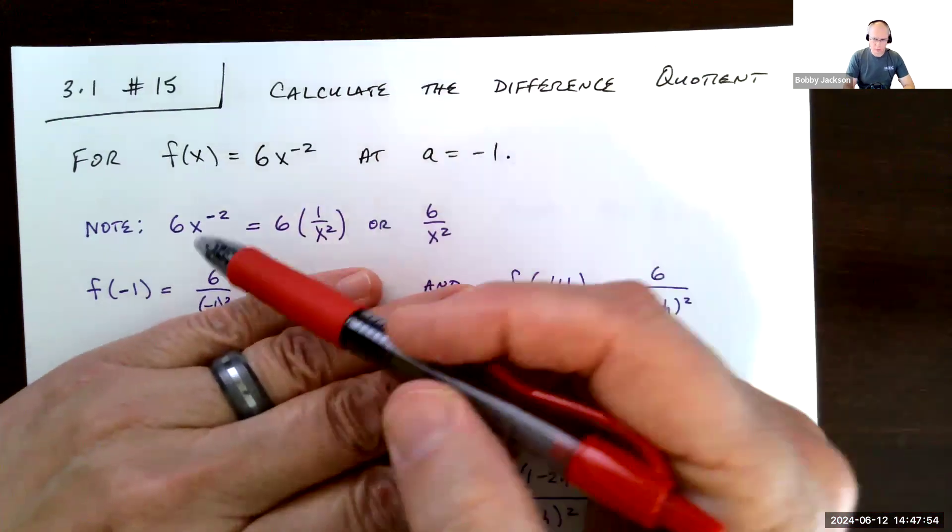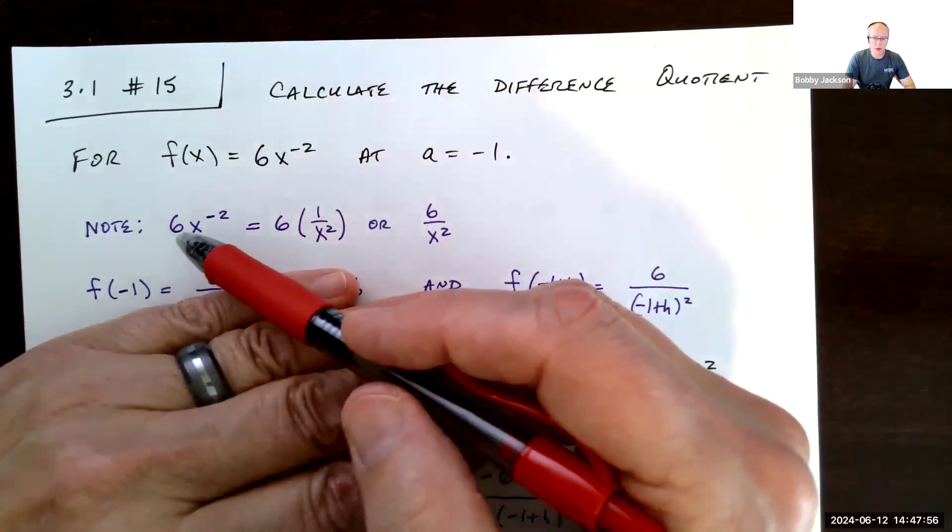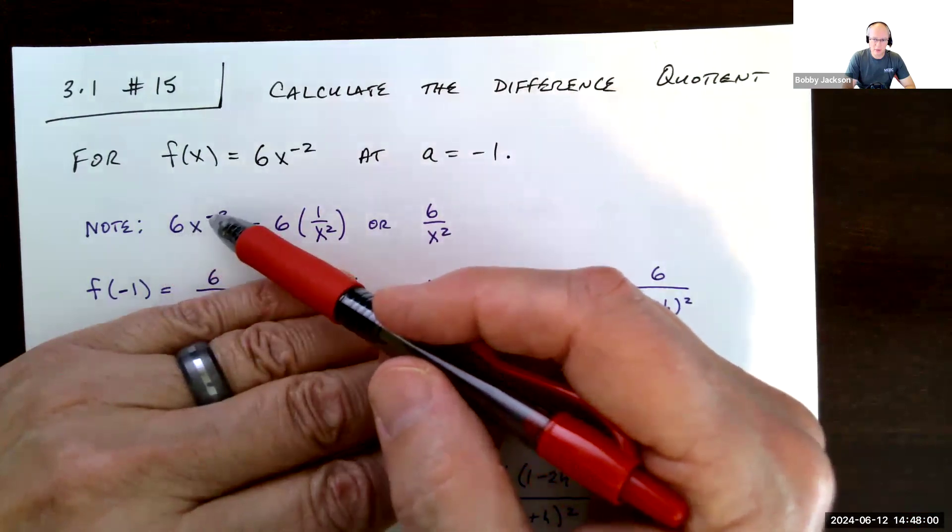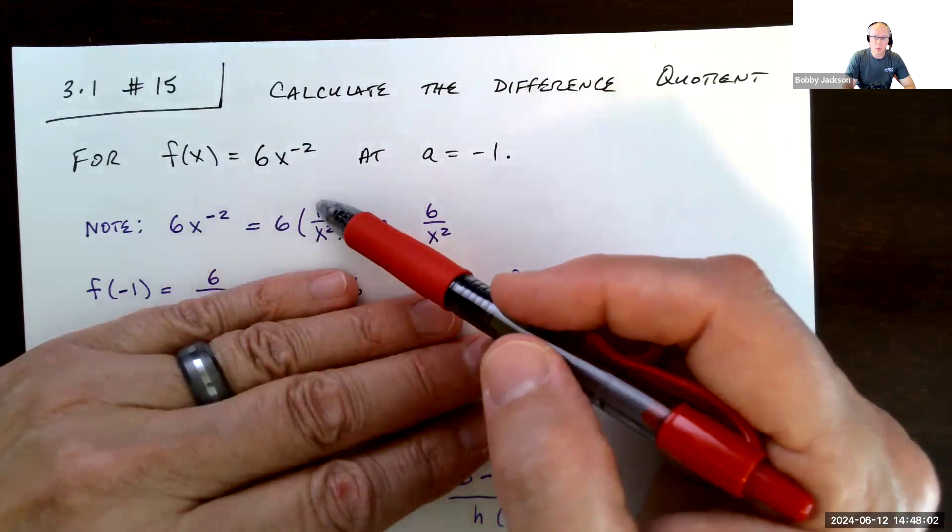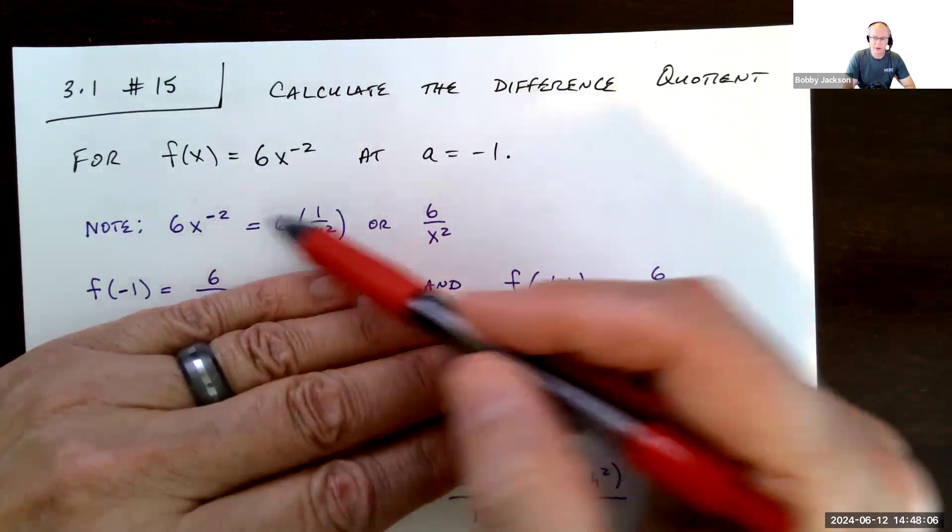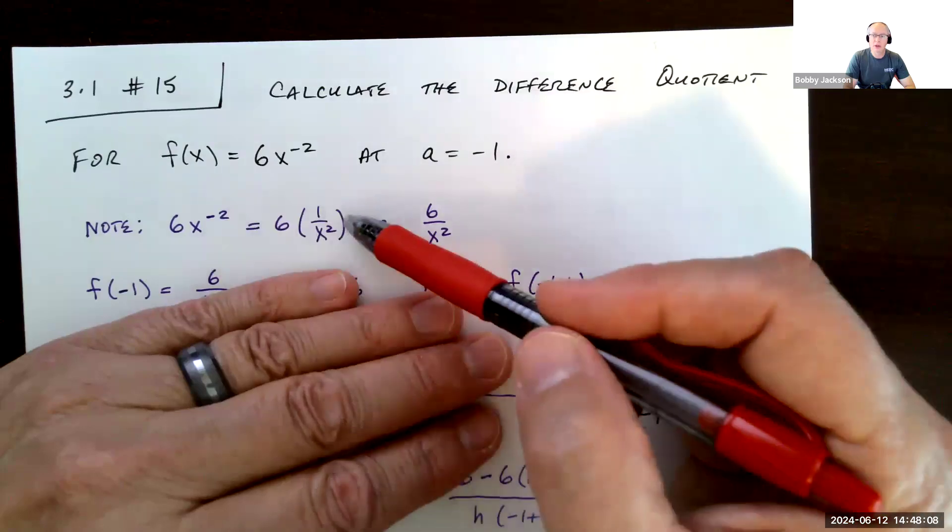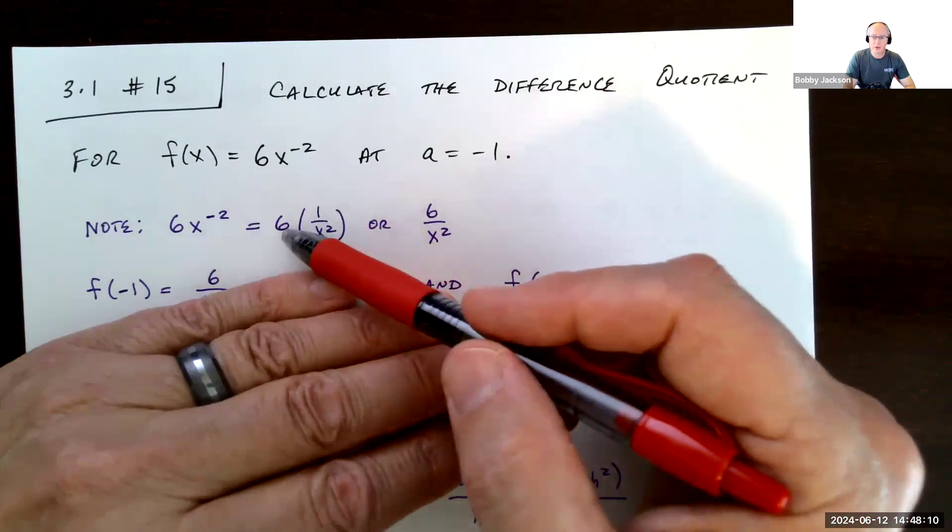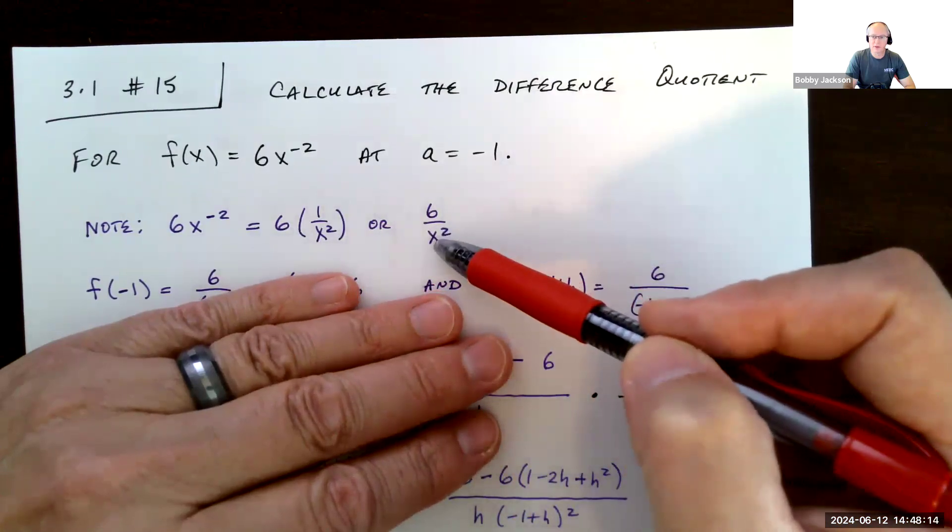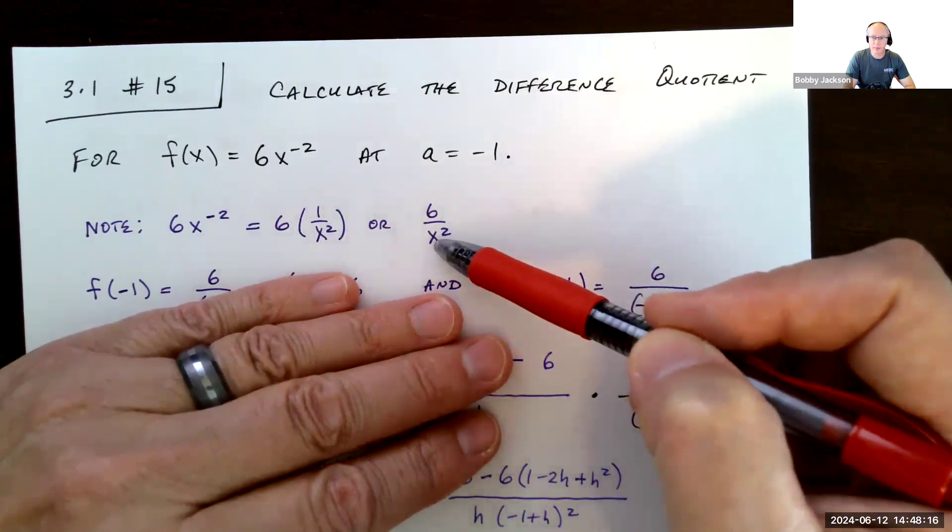So first, just note and make sure you understand, what does it mean to have a negative exponent? 6 times x to the negative 2 power is the same as 6 times 1 divided by x to the positive 2 power. Negative exponent meaning reciprocal. So 6 times 1 over x squared is just 6 divided by x squared. So this is really our function. I'm going to use that form.